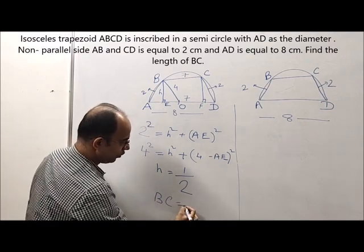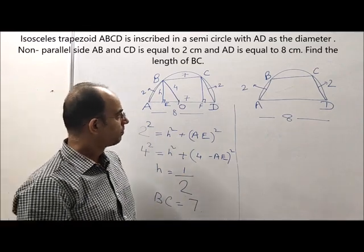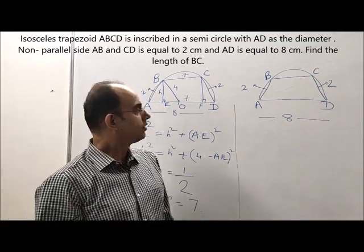Since EF is 7, therefore BC is also equal to 7. Hence the answer comes out to be BC is equal to 7. So this was the first method.